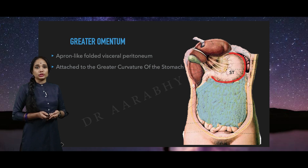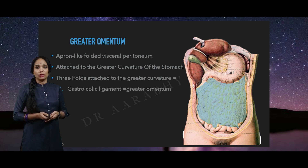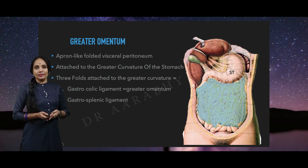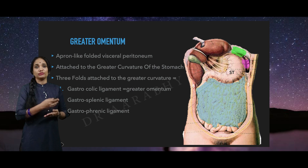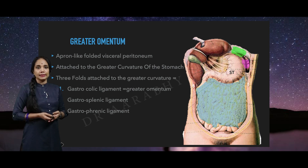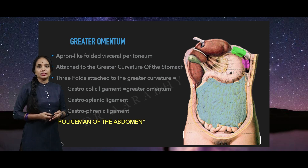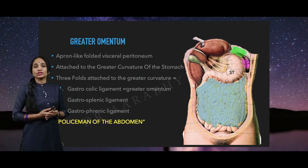The greater curvature is also subject to two other folds of peritoneum — there are a total of three folds. The first one is the greater omentum, also called the gastro-omental ligament or gastrocolic ligament. The second fold is the gastrosplenic ligament, and lastly we have the gastrophrenic ligament. These are all peritoneal folds which connect the stomach to different parts of the abdominal cavity: the gastrosplenic extends from the greater curvature to the spleen, the gastrophrenic extends from the greater curvature to the diaphragm, and the greater omentum plays a very important role in containing infections of the peritoneum — that is why it is also called the policeman of the abdomen.